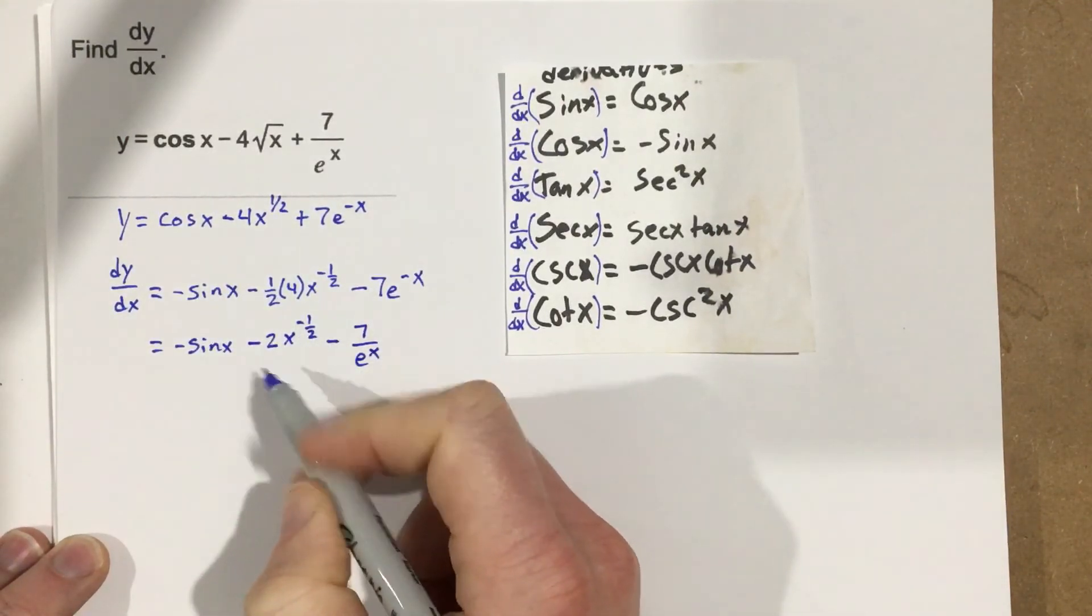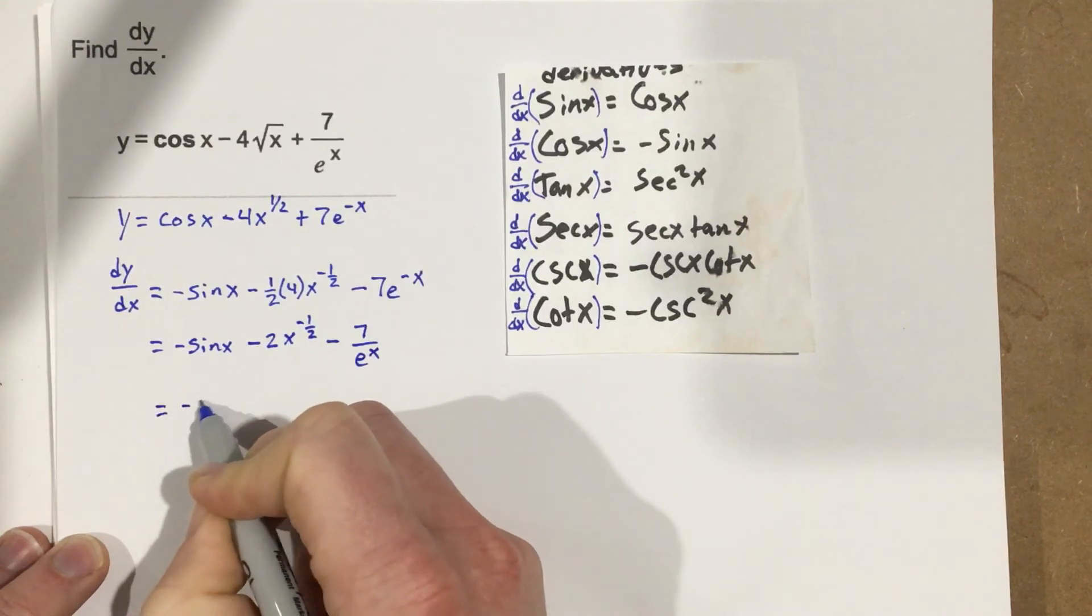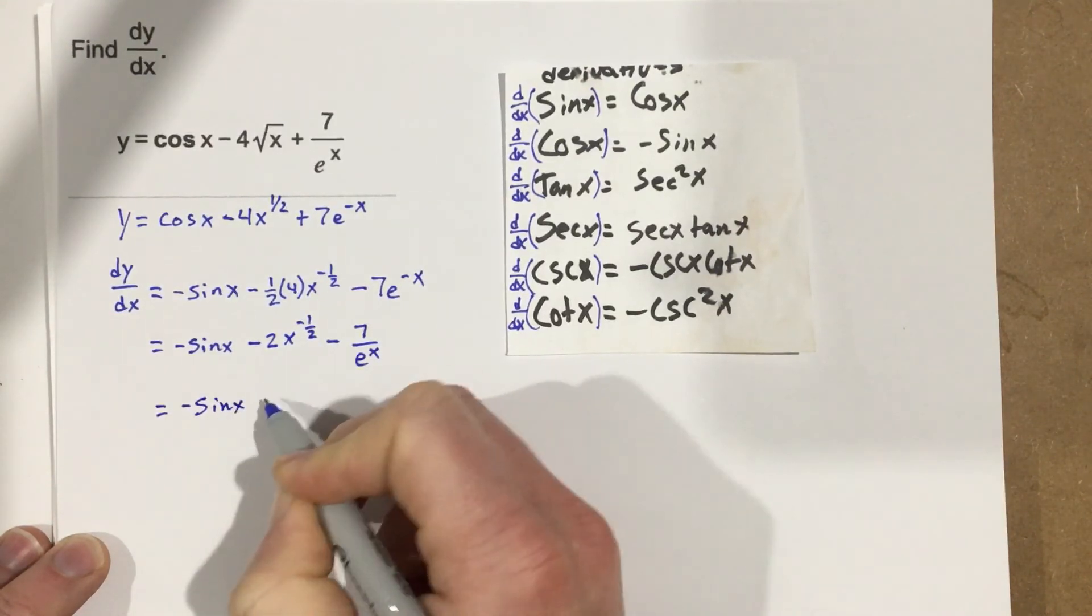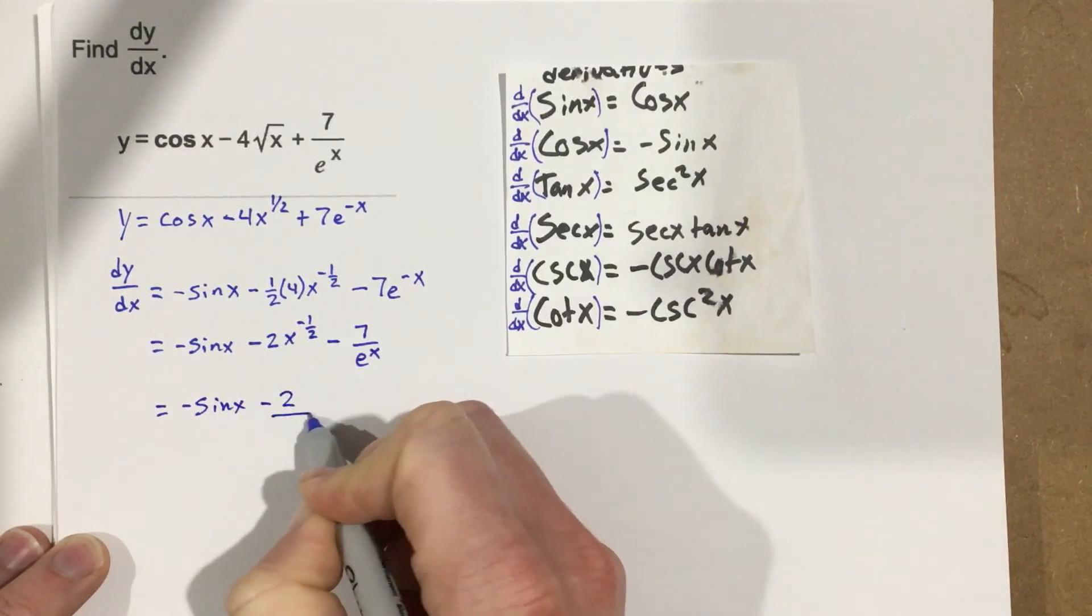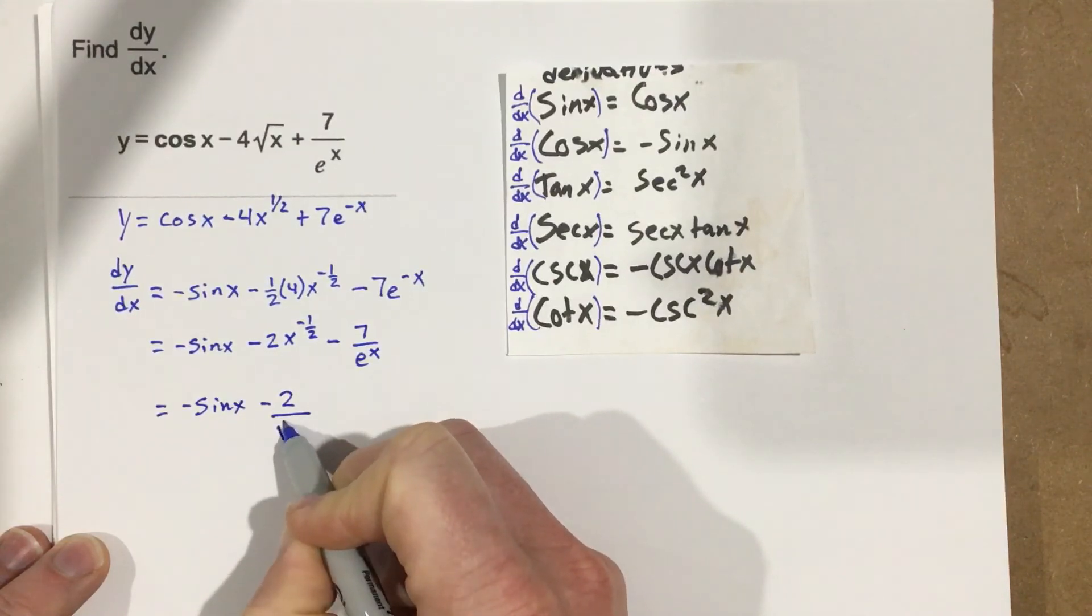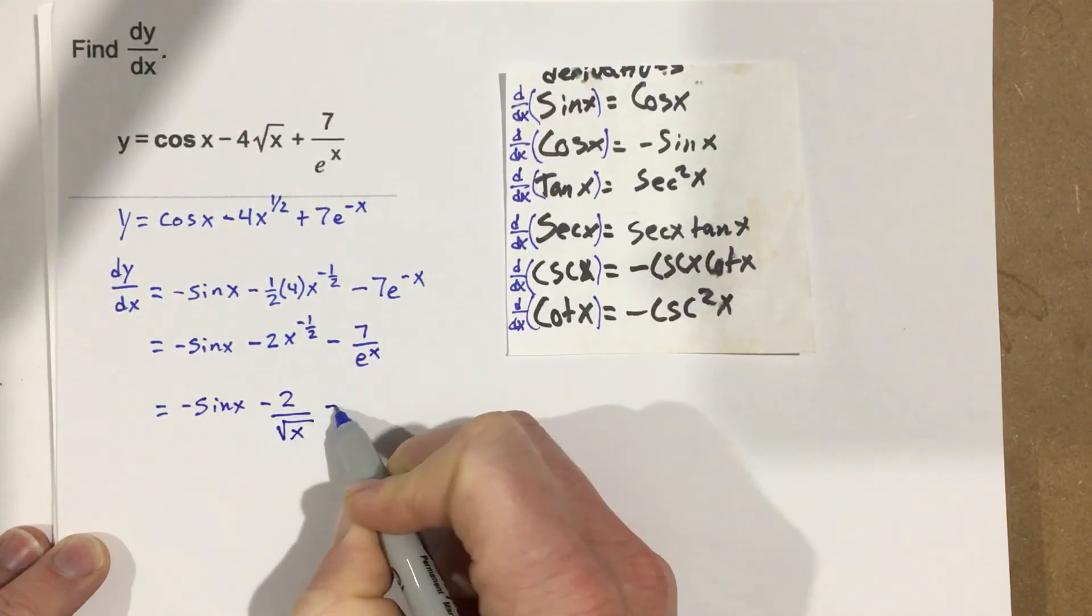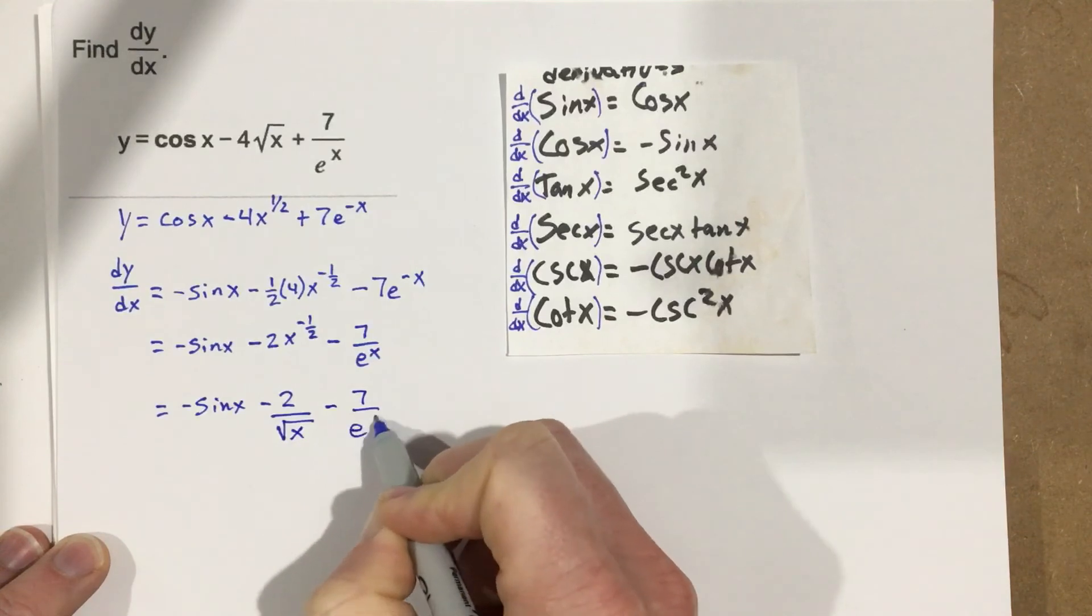And then lastly I'll take this to the bottom and write it as a radical. So negative sine x minus 2 over root x minus 7 over e to the x.